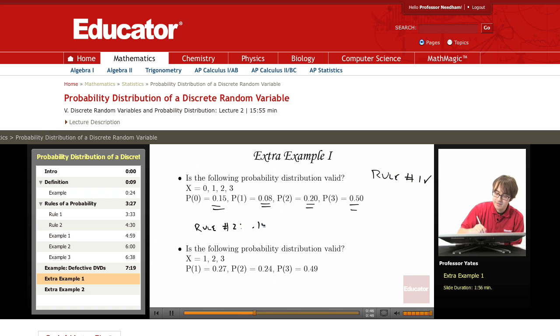We take 0.15 plus 0.08 plus 0.2 plus 0.5. So this gives us 0.7, 0.85. This gives us 0.93. So we don't have rule number 2, they should add up to 1, so the answer for this first one is no. It's not a valid probability distribution.